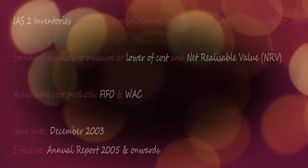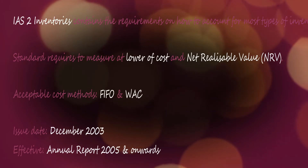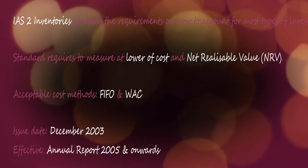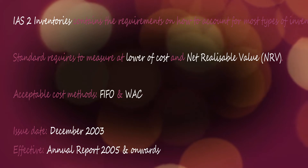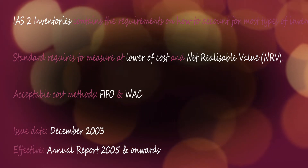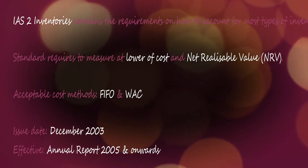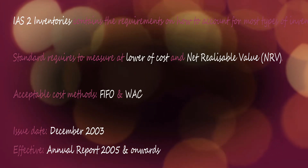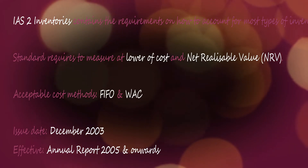IAS-2 inventories contains the requirements on how to account for most types of inventories. The standard requires inventories to be measured at the lower of cost and net realizable value. The most acceptable methods of determining cost include FIFO — first in, first out — and weighted average cost. IAS-2 was issued in December 2003 and has been applied from January 2005 onwards in annual reports.